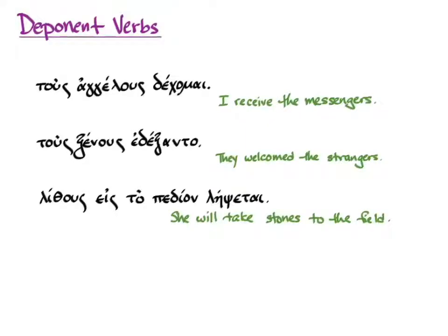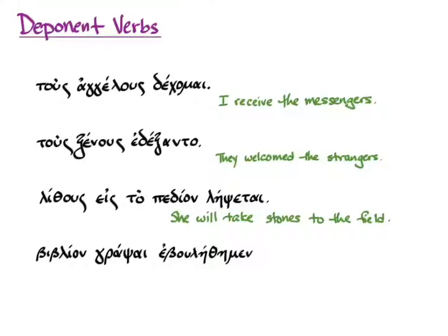In the future, lambano is deponent — it has a future deponent form — so we simply translate it as the future of the English active meaning; that's just how this verb works and something you need to know in order to translate. For the last example, biblion grapsai ebulethemen — there we have the aorist of bulomai — and the translation is 'We wanted to write a book.'